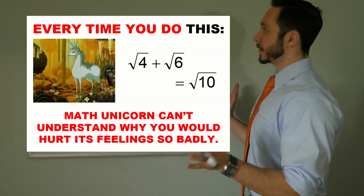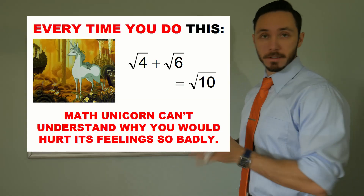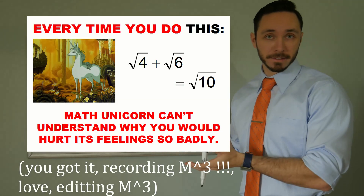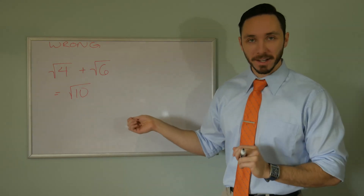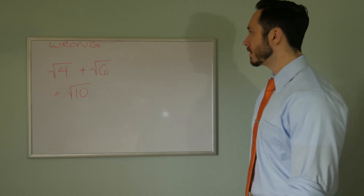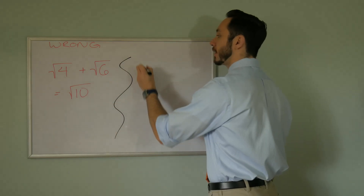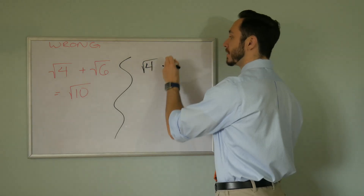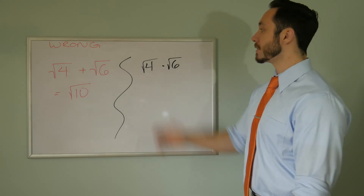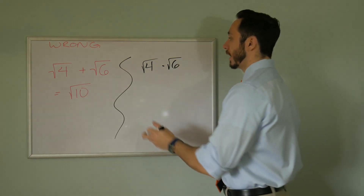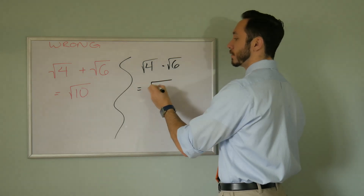The next one reads: every time you do this, the math unicorn can't understand why you'd hurt its feelings so badly. We have the square root of four plus the square root of six, and apparently that's the square root of 10 — right? No. What students were probably thinking is: if you have the product, the square root of four times the square root of six, you actually can multiply the two numbers inside the radical and keep it underneath. That's fair game — it equals the square root of 24. But you can't do that with addition.